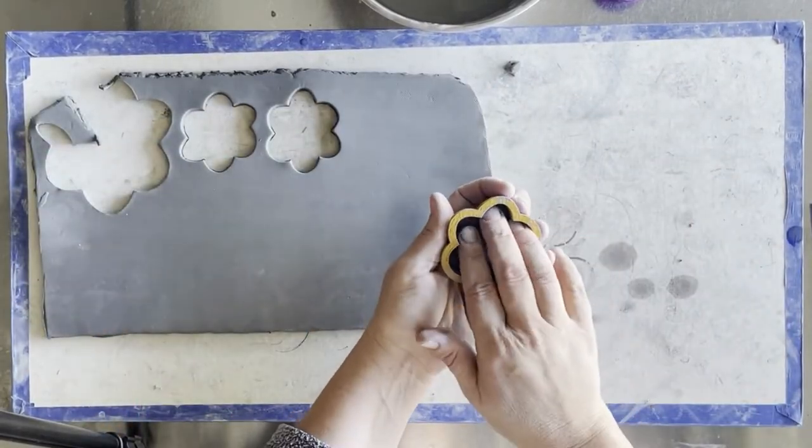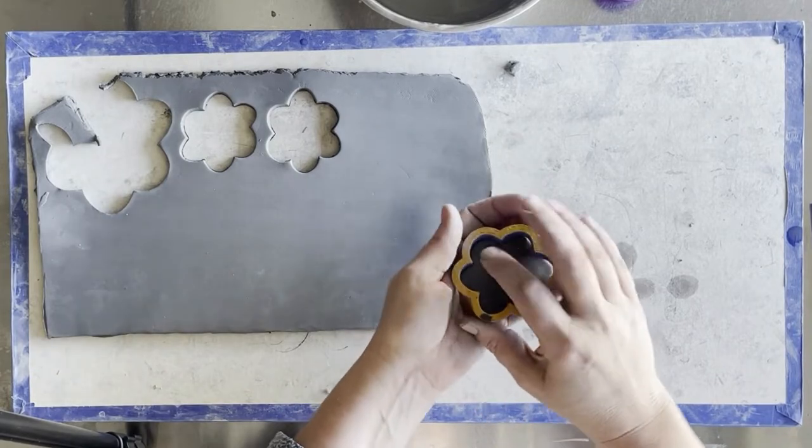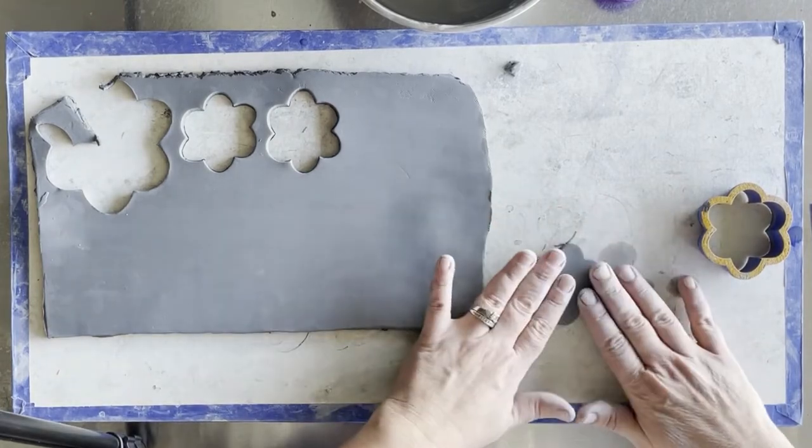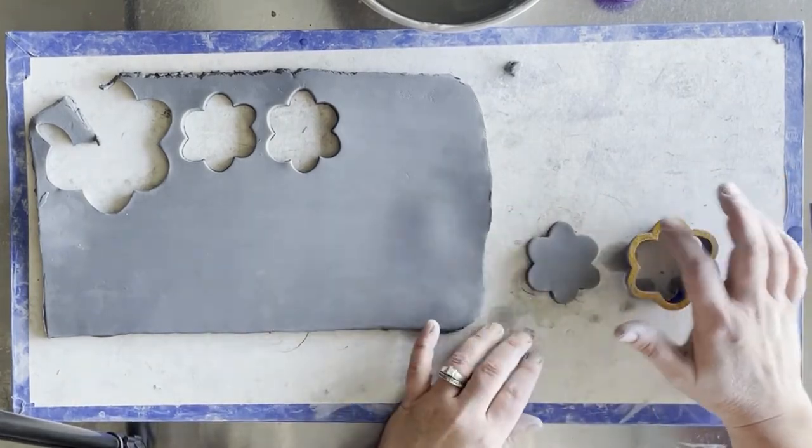Once the flower shape has been cut, use gentle pressure to push it out of the cookie cutter, making sure that we keep notice of where the top is.